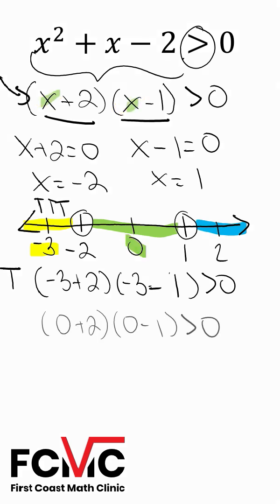Next, I'm going to check 0. We get 0 plus 2 times 0 minus 1. We get a positive times a negative, which is a negative, and this statement is going to be false because the negative is not greater than 0. So we're going to write false above this interval.